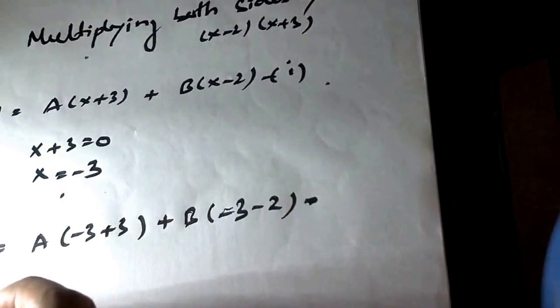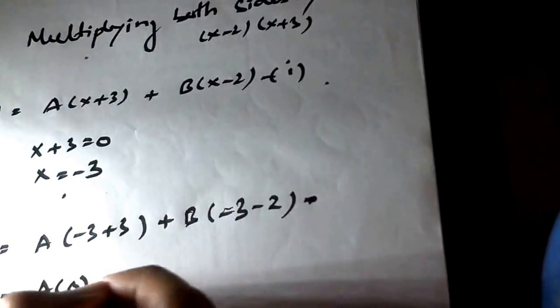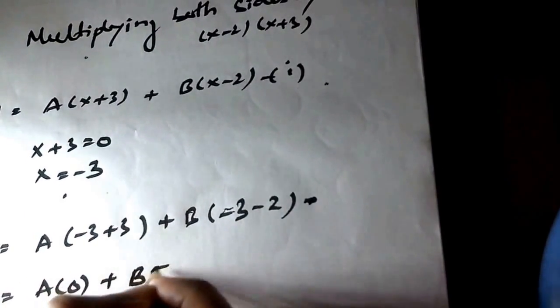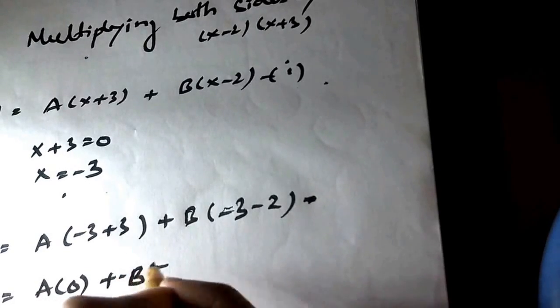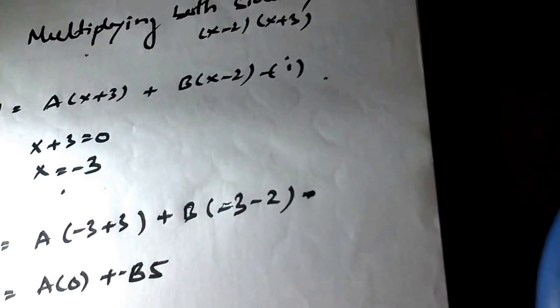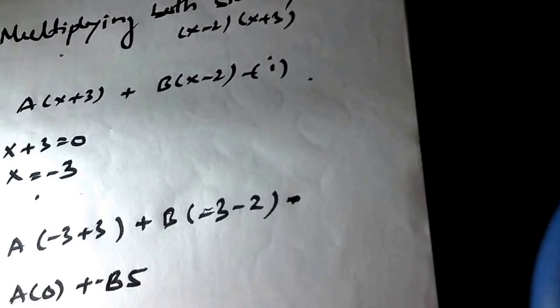And then solving it 0 b minus 5 and then b comes out to be minus 1 by 5.